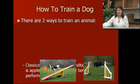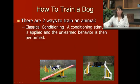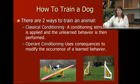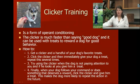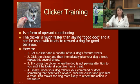How to train a dog: there are two ways to train an animal. Classical conditioning, where a conditioning stimulus is applied and the unlearned behavior is then performed. Or operant conditioning, which uses consequences to modify the occurrence of a learned behavior. Clicker training is a great way to train dogs and is a form of operant conditioning. The clicker is much faster than saying 'good dog' and can be used with treats to reward good behavior. You get a clicker and a handful of your dog's favorite treats, click several times giving a treat after every click, and then when the dog follows a command like sit, stay, or lie down, click and give a treat so it learns to associate the click with good behavior.